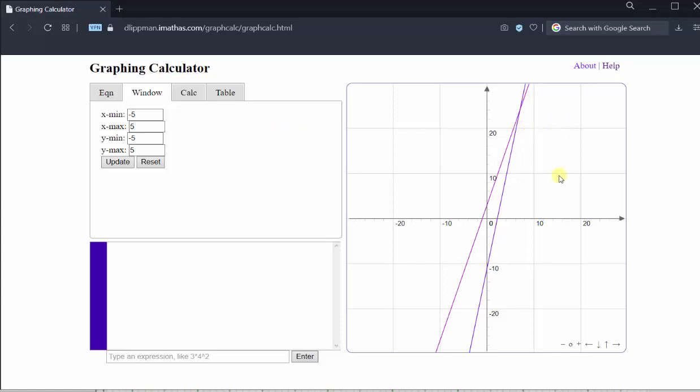But from here, let's go ahead and adjust the window manually. Let's change the x-axis from negative 5 to 10, and the y-axis from negative 5 to 30. This is not required, but it might give us a little better view.